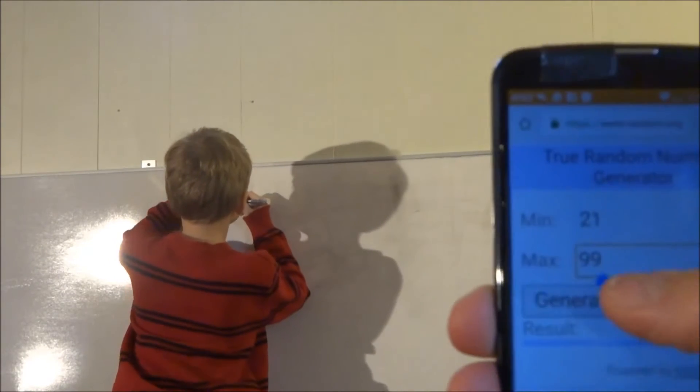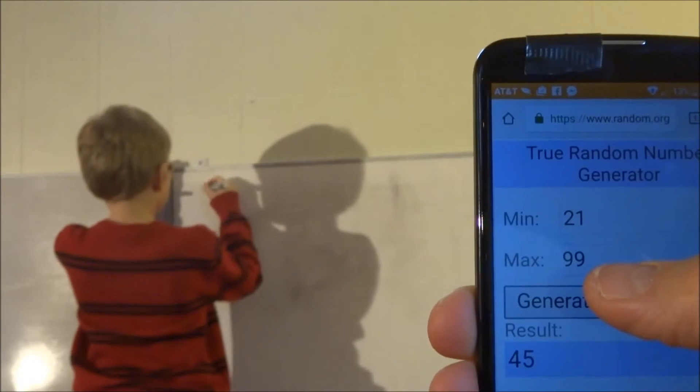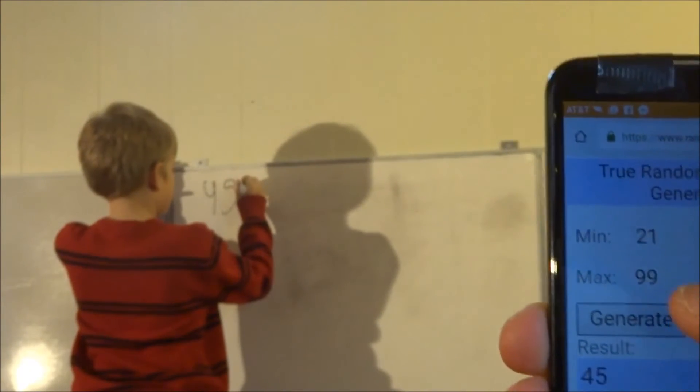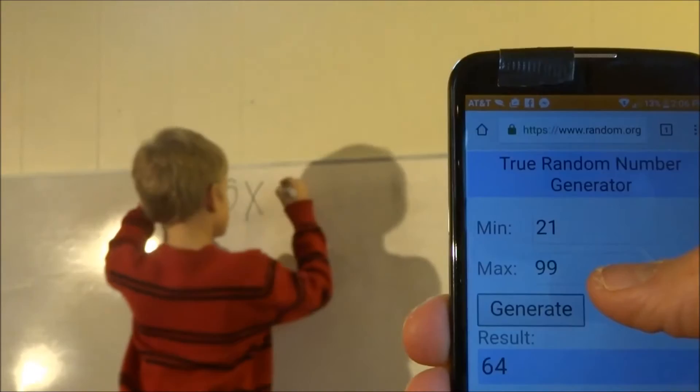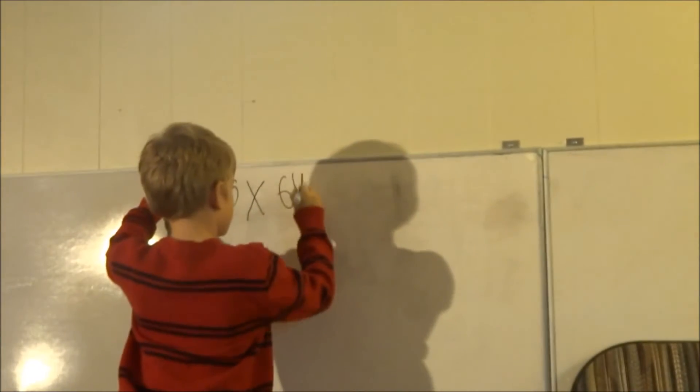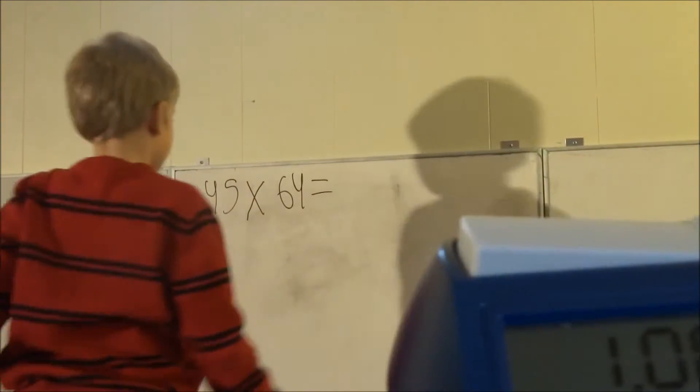Okay, so the first two numbers are 45 times 64. You have one minute. Ready, set, go.